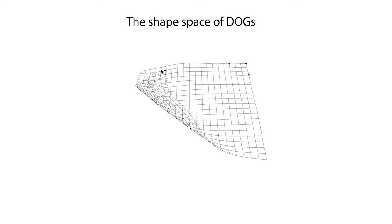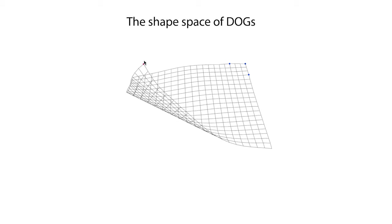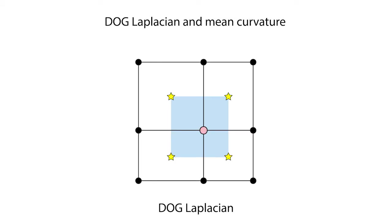We use our theory to discretize these flows and devise a strategy to handle singular points in the shape-space. We further derive a symmetric semi-positive definite DOG-Laplacian operator and a mean curvature by deriving the gradient of the surface area of a DOG net.